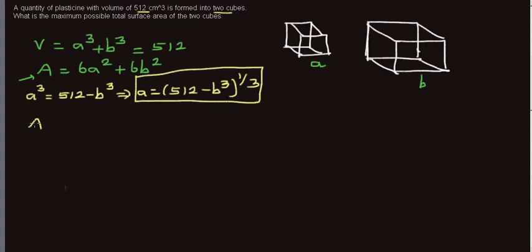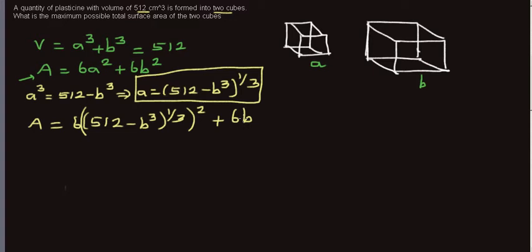Substituting into the surface area formula, the area as a function of B is: 6(512 − B³)^(1/3) squared plus 6B², which simplifies to 6(512 − B³)^(2/3) + 6B².